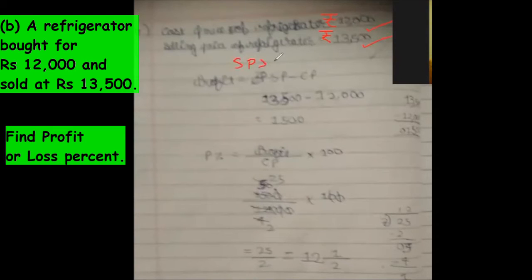Again, SP is greater than CP. Therefore, profit equals to SP minus CP. Again, rupees 1,500. Okay.